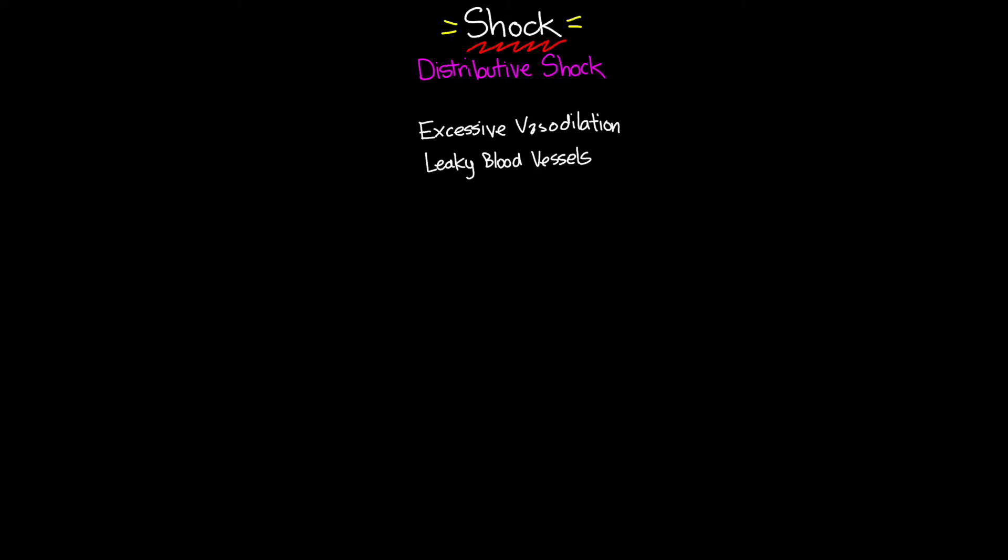For all three types of distributive shock, they achieve excessive vasodilation and leaky blood vessels through different processes, but these two things are what contribute to that shock state. With that said, let's move on to the first type of distributive shock we're going to talk about: anaphylactic shock.